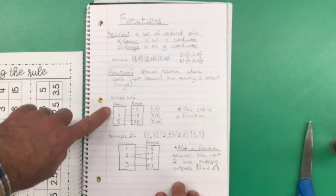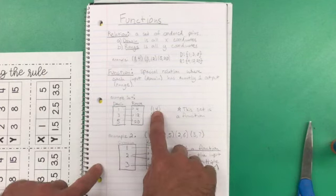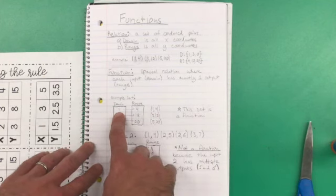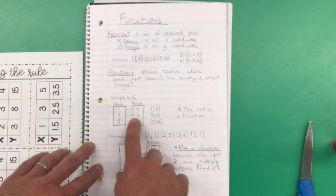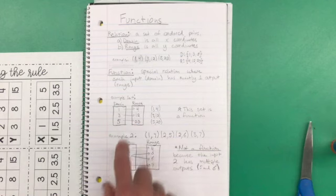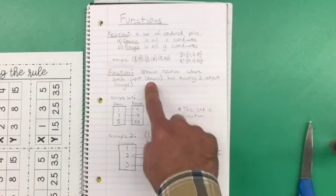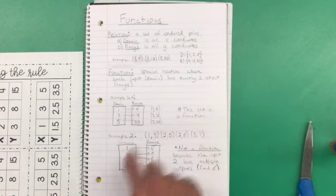Well, you can see how each domain unit or each member of our domain, like 1, only tracks to 4 for an output. So when x is 1, y is 4. When x is 3, y is 12. When x is 5, y is 20. That set is a function because each input has only one output.